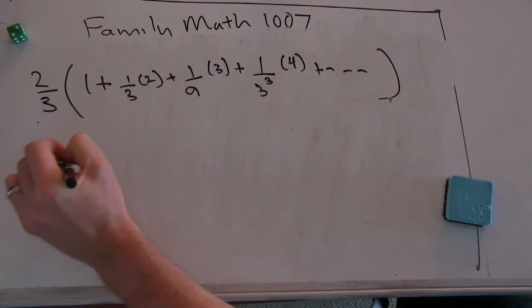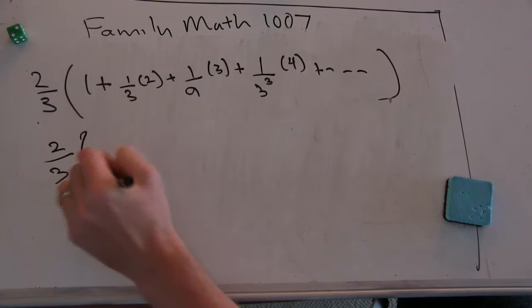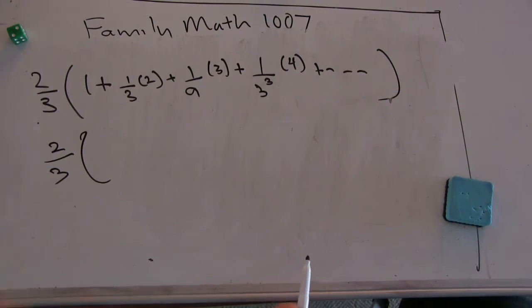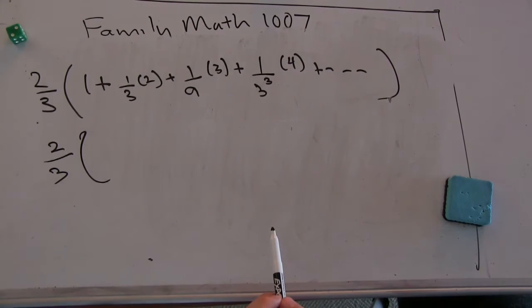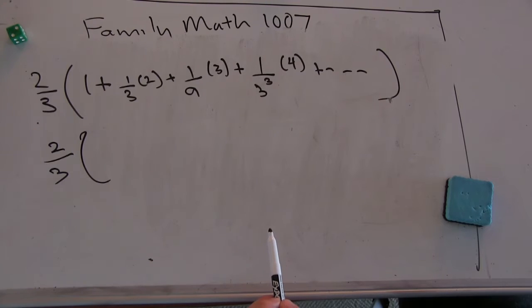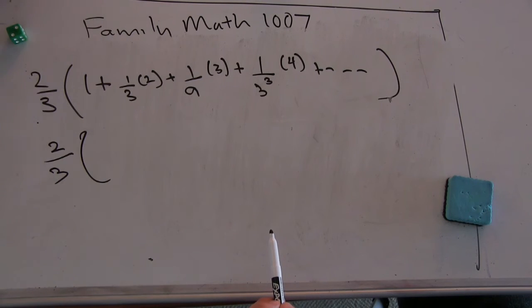Okay, so this is two-thirds. Sorry, I'm running through the tripod here, so I'm stretching. Two-thirds times, what should this series equal? Well, it's in the same form as the series we looked at, so x in this would be one-third.